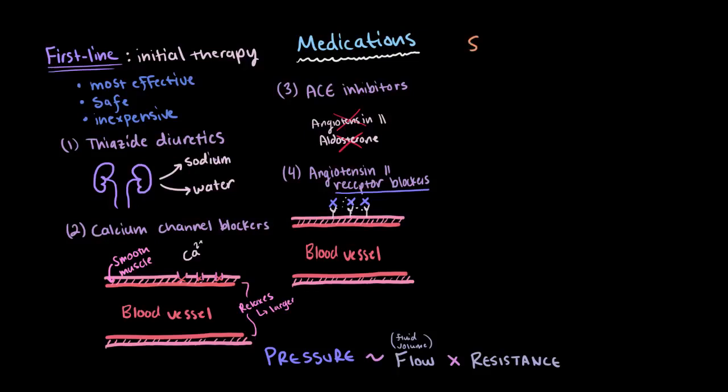But if the first-line choices for medications aren't effective, then the physician might choose to go to the second-line choices for treating hypertension. Some of those are as follows.